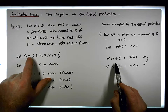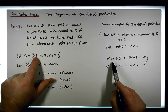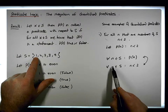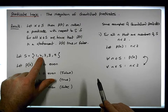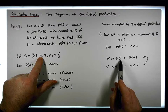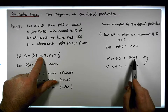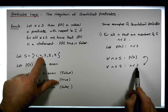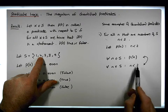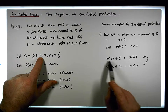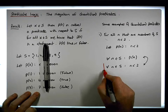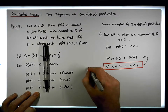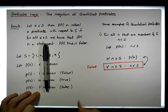Let's go through the values. So we have 1 — 1 is an element of s, so 1 becomes n. Is 1 less than 2? Well, that's true. Now 4 — 4 is an element of s. What about P of 4? Well, P of 4: is 4 less than 2? That's actually false. So we found an instance where this isn't true, even though we're saying it should be true for all values. So this particular quantified predicate is actually false.